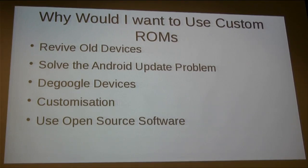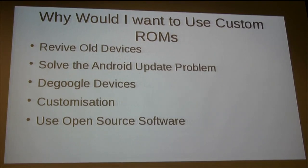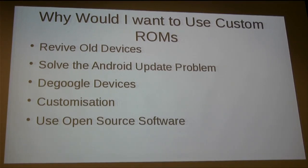In general, the timeframe of getting updates is a whole lot faster depending on your manufacturer. Pixel devices and OnePlus devices are pretty good with software updates, but other phones like Samsung and Xiaomi and many other brands may or may not give you the software support you'd probably want.